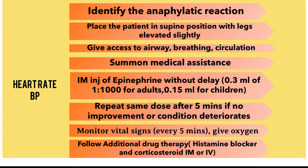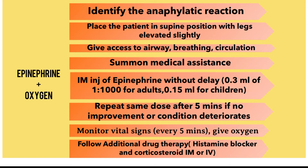During the acute phase of the anaphylactic reaction, the two main things you'll be doing are intramuscular injection of epinephrine and administration of oxygen. Once medical assistance is summoned, as follow-up or additional drug therapy, you can give histamine blockers or corticosteroids intramuscularly or intravenously.